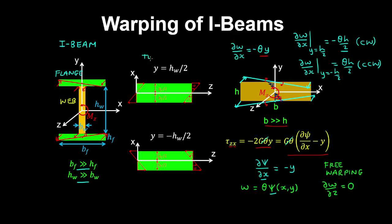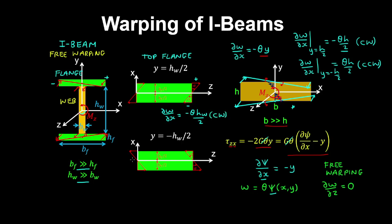For the top flange, we can visualize this in 2D in the x-z plane, where we have positive warping in the z direction on one side and negative warping in the z direction on the other. Note that here we also have the assumption of free warping. Based on our analysis of this rectangular bar, we assume that the top flange warps by an angle of minus theta times the height of the web divided by 2 — a clockwise warping rotation. The warping angle is proportional to the distance from the centroid multiplied by the rate of twist, as seen in the rectangular section.